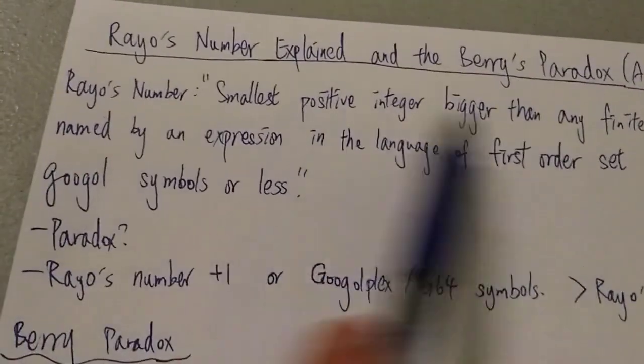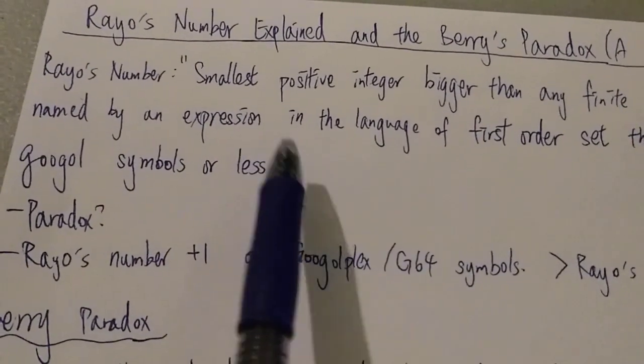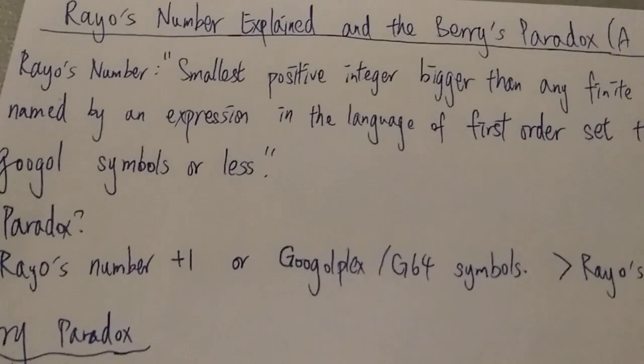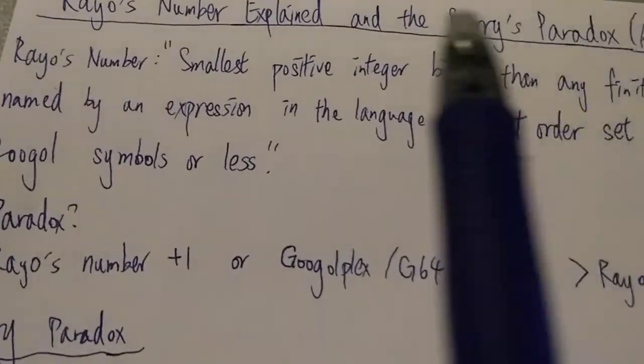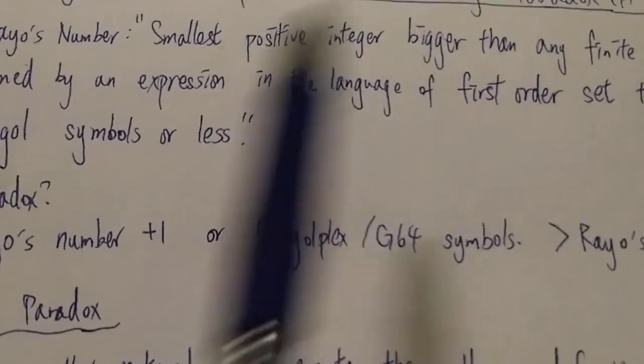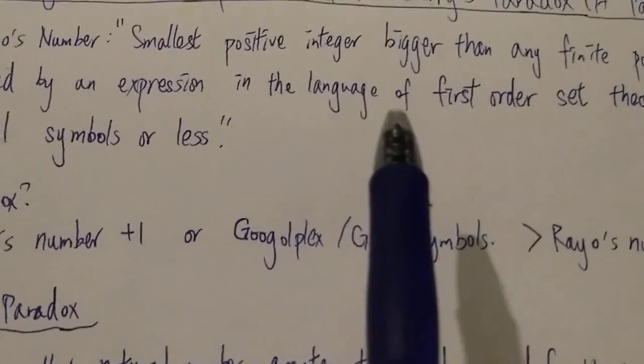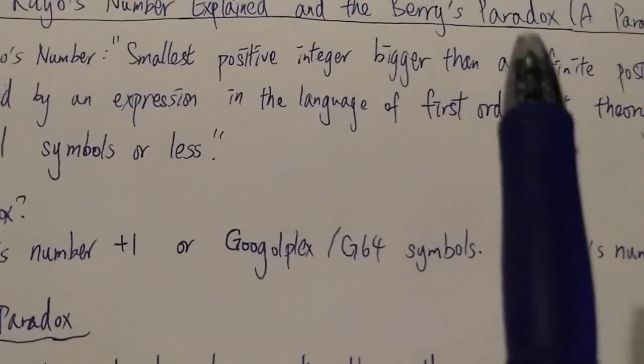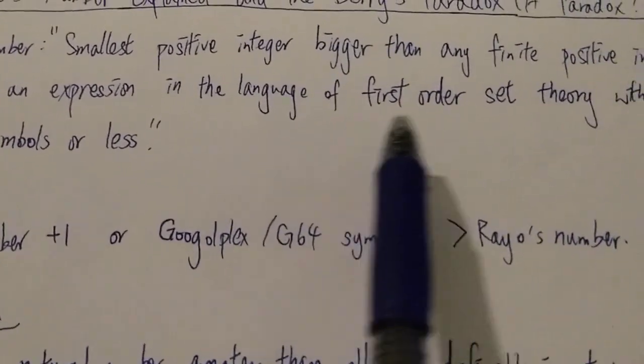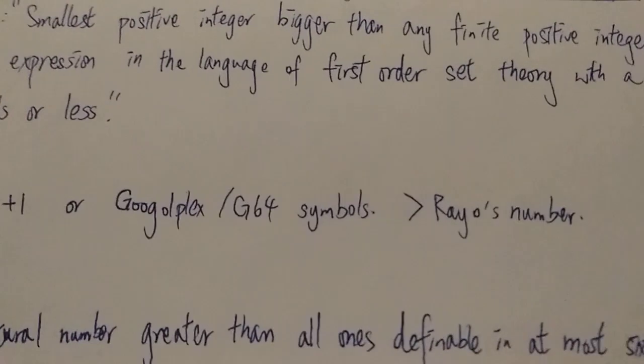So Rayo's number is not defined using the English language. So of course this definition is just the English explanation of what Rayo's number is. The actual Rayo's number is not this sentence. I mean it's not defined using the English language. In fact it used the language of the first-order set theory.